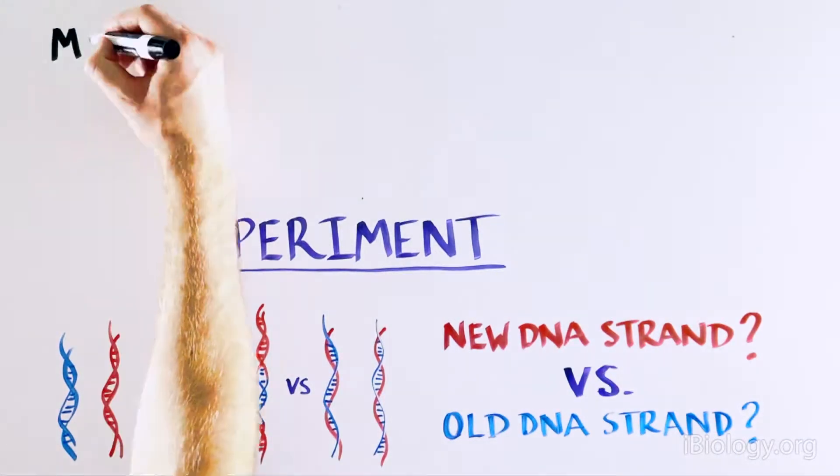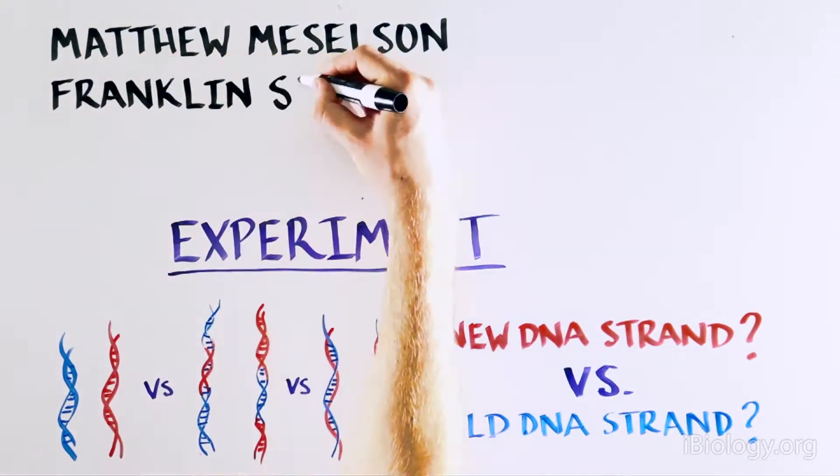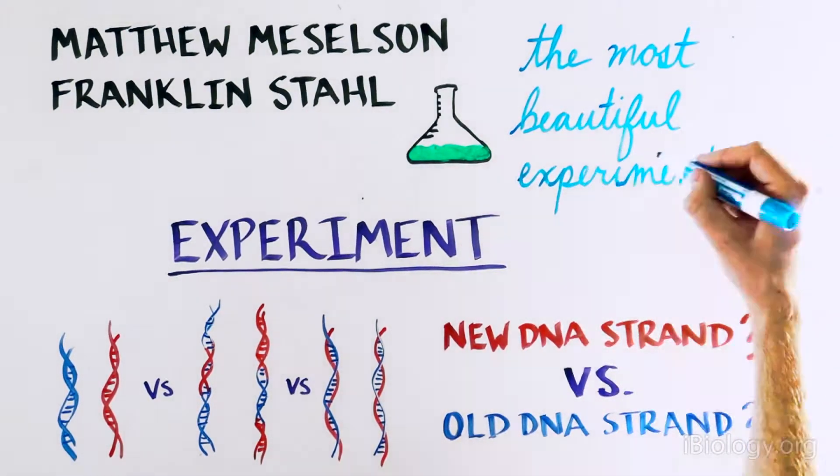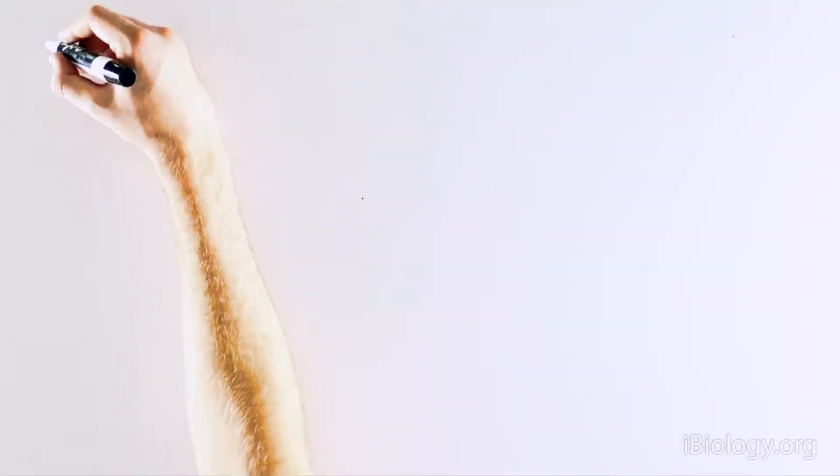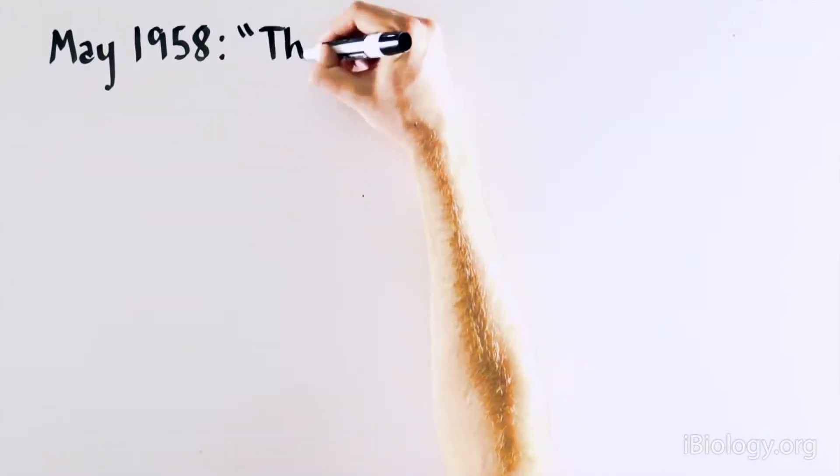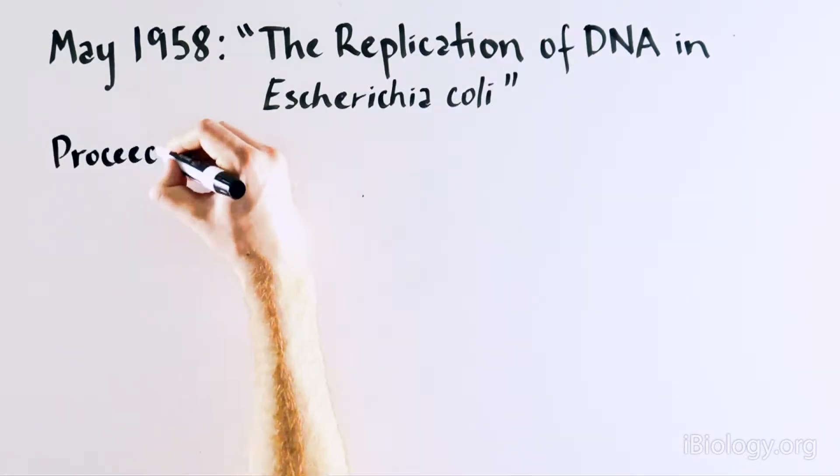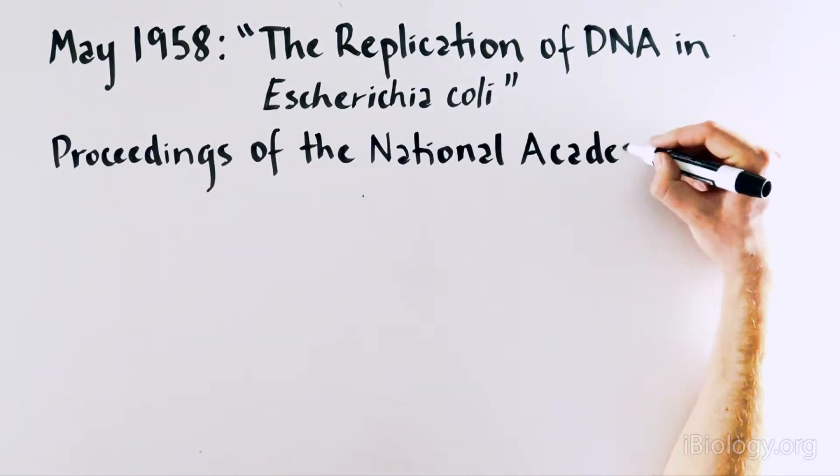So two scientists, Matthew Meselson and Franklin Stahl, had an idea to design an experiment that would be known as the most beautiful experiment in biology. Their findings are published in their article titled The Replication of DNA in E. coli, published in May 1958 in the Proceedings of National Academy of Sciences.